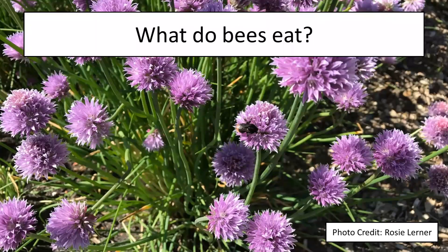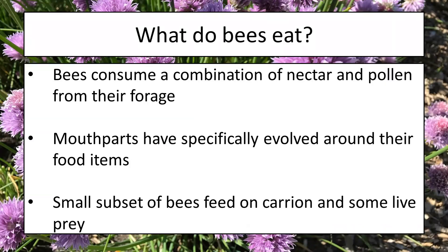So let's dig into what bees eat. Bees consume a lot of resources from plants — specifically nectar and pollen. Bees generally aren't herbivorous; they want protein from the pollen and sugar from the nectar, and they have evolved mouth parts very specific to that task. However, I want to make sure you're aware there is a small subset of bees that actually consume carrion. This is called a vulture bee — it does not consume pollen or nectar; it is a carrion eater.